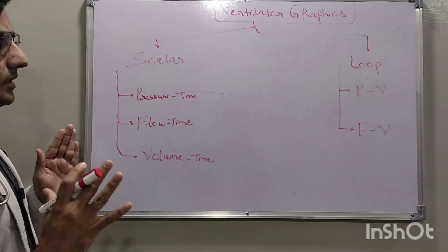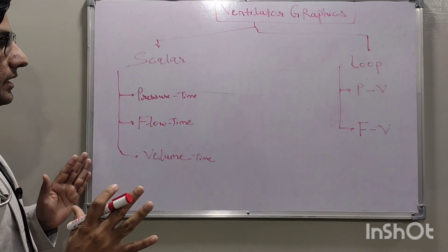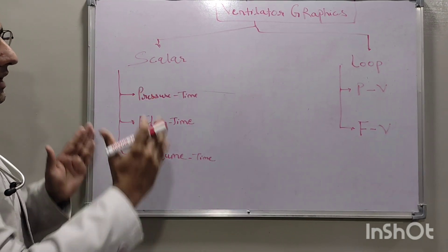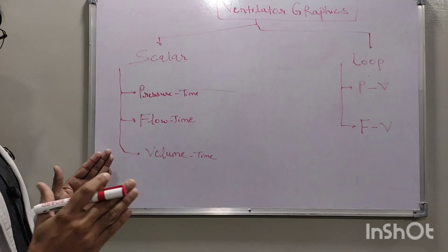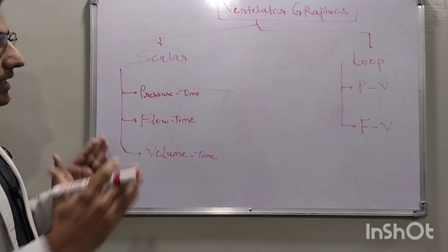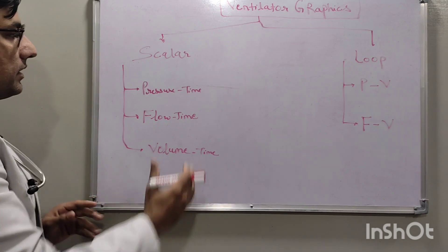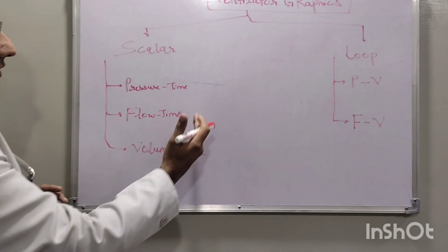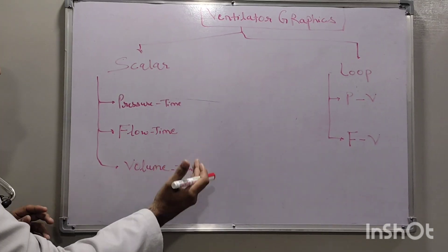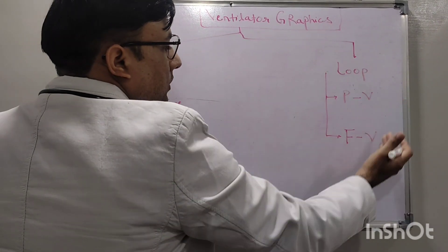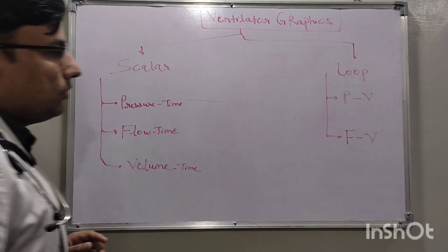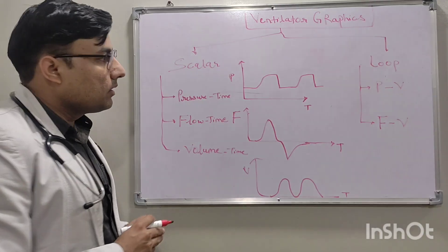So five types of graphics are there. We will see these graphics one by one: first pressure-time, flow-time, volume-time, then loops — pressure-volume and flow-volume loop.